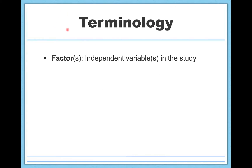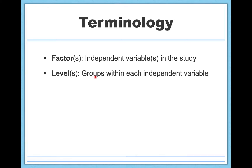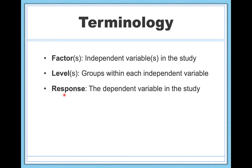Let's start with a little bit of terminology, which changes when we talk about ANOVAs because the design tends to be more complicated. First, we have factors — these are the independent variables in the study. Some ANOVAs have only one factor, others have multiple. Then we have levels, which are the groups within each independent variable. And the response variable is the dependent variable — the outcome you're interested in, the variable you want to know if the factors and levels make a difference on.